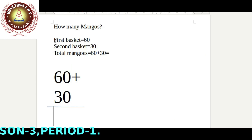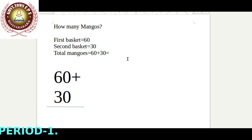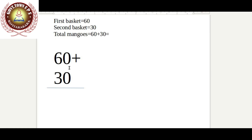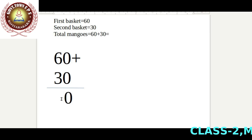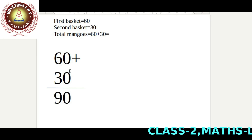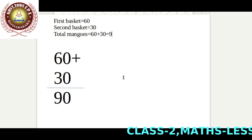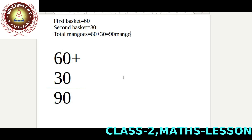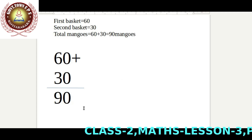We write the steps like this. How many mangoes in the first basket? Sixty. Second basket? Thirty. We find the total mangoes: sixty plus thirty. We start adding from the ones place. Zero plus zero equals zero. Six plus three equals nine. So sixty plus thirty equals ninety. The answer is ninety.